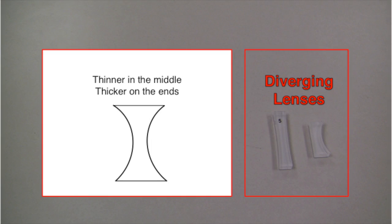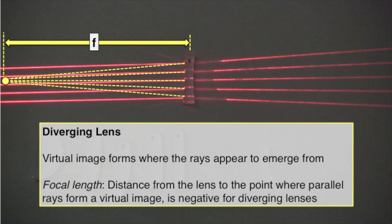Diverging lenses are thinner in the middle and thicker on the ends. These lenses cause incoming rays to diverge or spread out. A virtual image forms where the diverged rays appear to emerge from. The focal length for diverging lenses is negative.